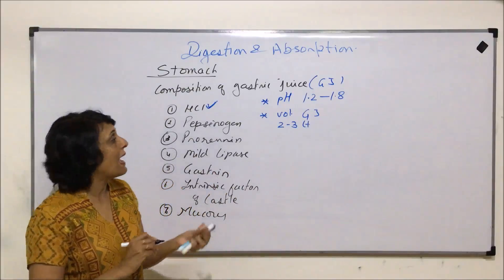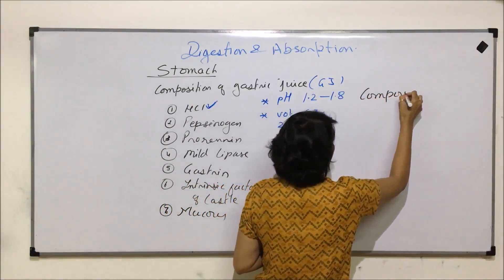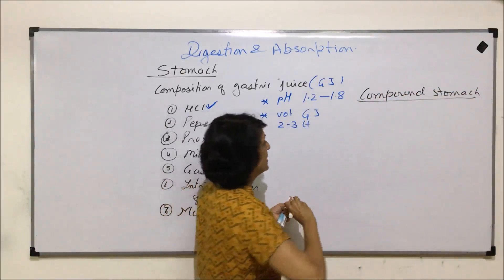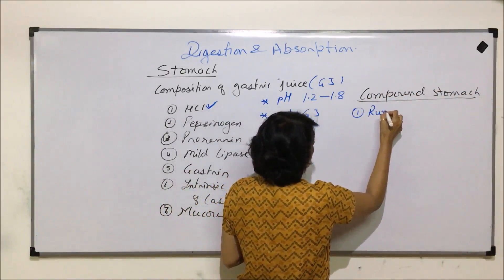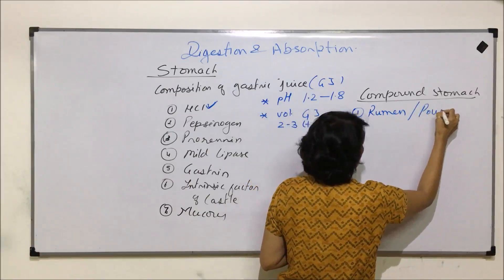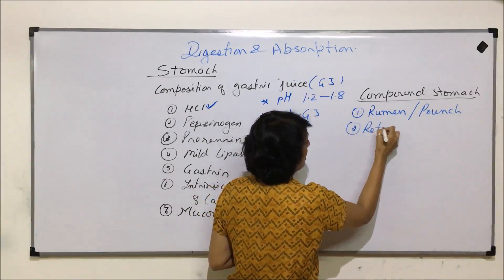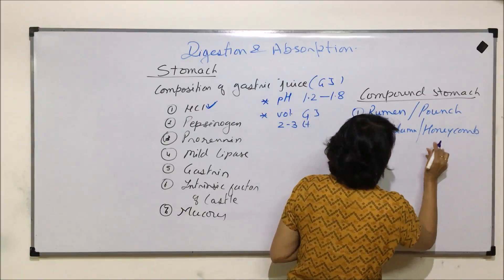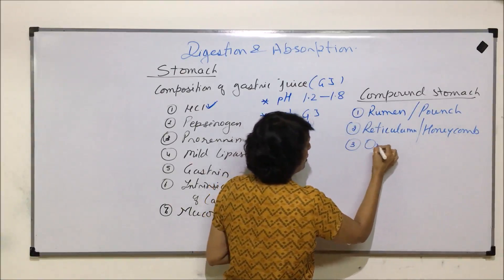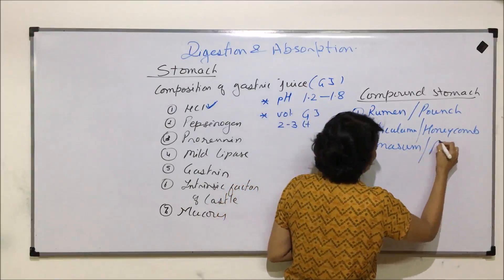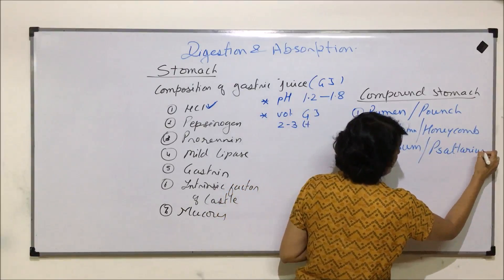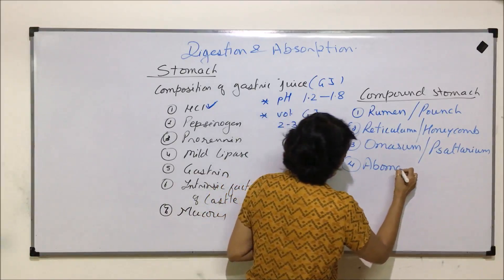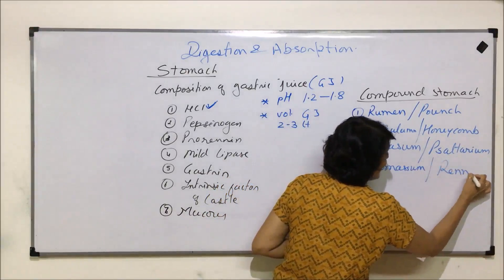Ruminating animals have compound stomach. This compound stomach has four compartments. These compartments are known as rumen which is also known as paunch. Second is reticulum which is also known as honeycomb. The third is called omasum which is known as psalterium. And the fourth compartment is abomasum which is also known as rennet.